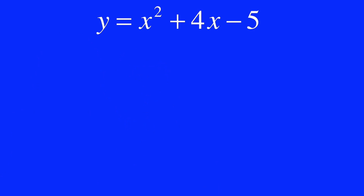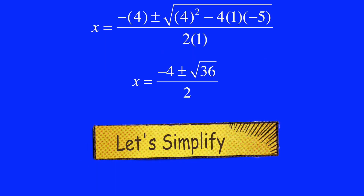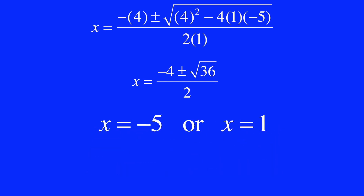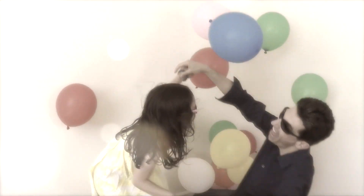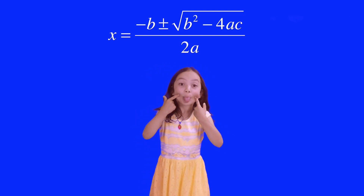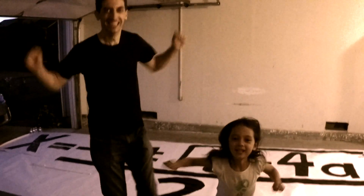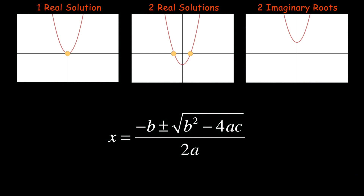x equals negative b plus or minus the square root of b squared minus 4ac all over 2a.